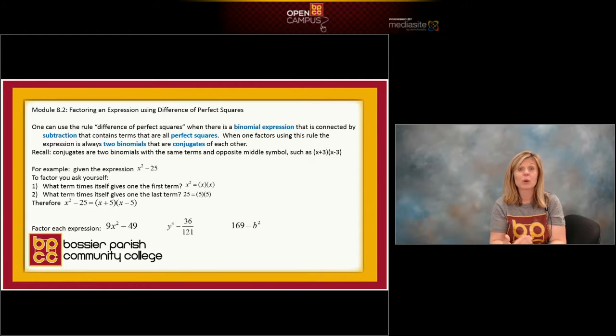Now, the symbol in between is subtract. We've already discussed this. Subtract means the signs have to be different. So one of the parentheses gets the positive 5 and the other parentheses gets the negative 5. And x plus 5 and x minus 5 are conjugates of each other. And you're done.